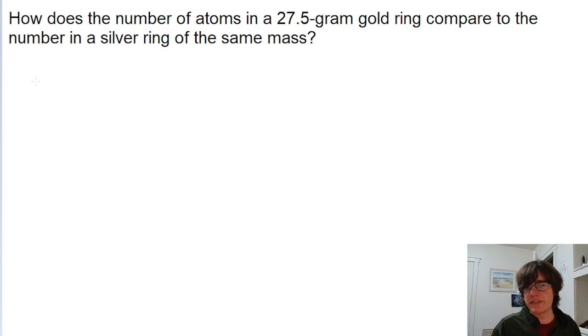The problem doesn't give us any information aside from the mass of the ring, so we have to use a periodic table to look up additional information. Let's first start off by finding the number of atoms in the gold ring. The number of atoms in the gold ring, and gold is represented on the periodic table as AU.